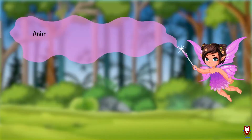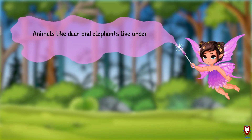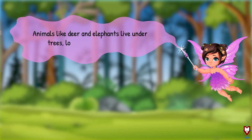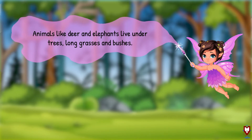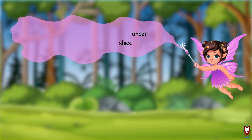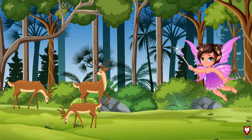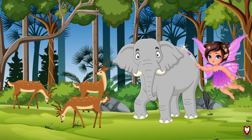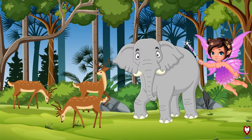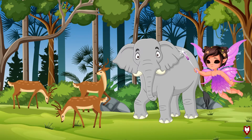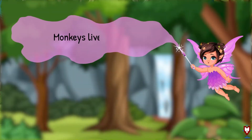Animals like deer and elephants live under trees, long grasses and bushes. Monkeys live on trees.